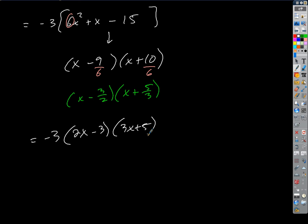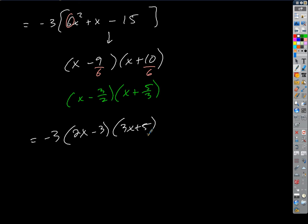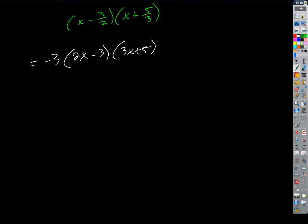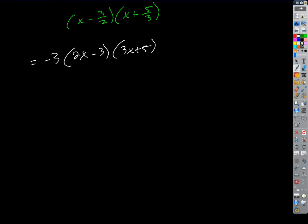That gives us negative 3 times 2x minus 3 times 3x plus 5. But that doesn't quite match what we call factored form — it doesn't match the form A times x minus P times x minus Q. So here's the question for you advanced math students: how do I get from there to there? The problem is the coefficients.